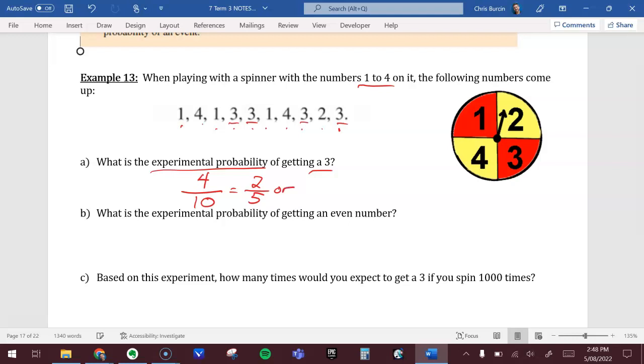We can also express that as 0.4, or four tenths. Of course, that's also 40 percent. This comes from the actual experiment where we spun the spinner ten times, and four out of ten times, it was a three.